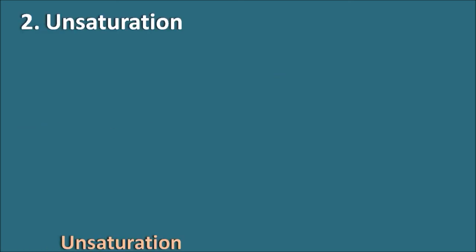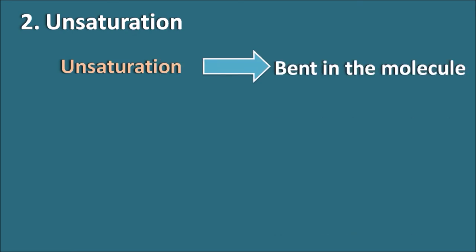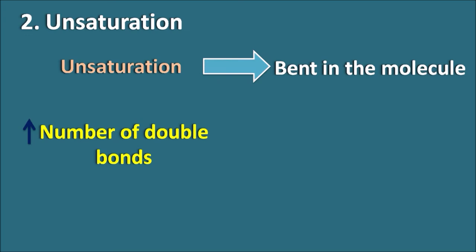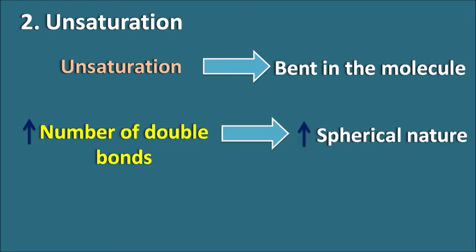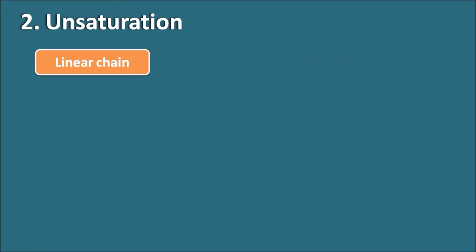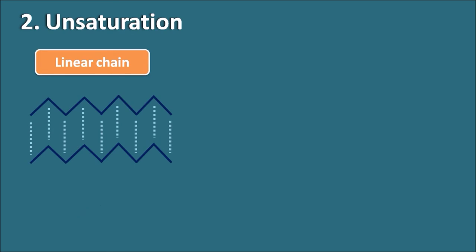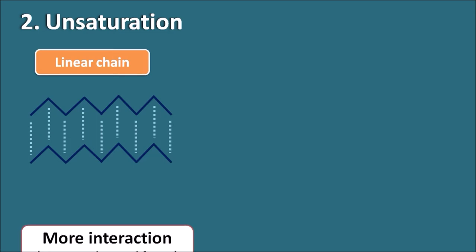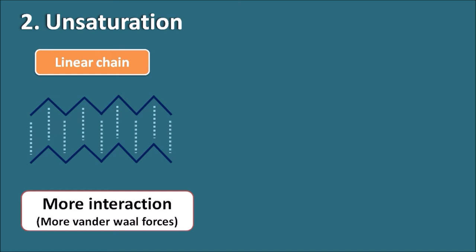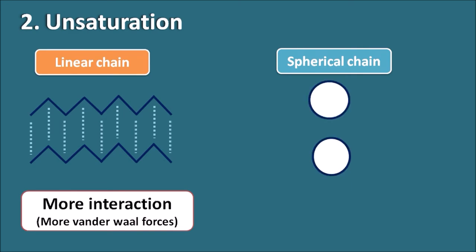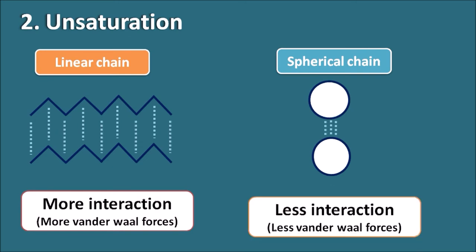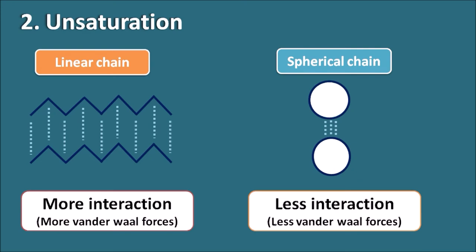The second factor is unsaturation. Unsaturation produces a bend in the molecule, and as the degree of unsaturation increases, the bend increases. As the number of double bonds increases, the molecule becomes more spherical in nature due to the bends. A linear chain has more points of contact and therefore stronger Van der Waals forces and a higher melting point, whereas a more spherical chain has fewer contacts, less Van der Waals interaction, and a lower melting point.